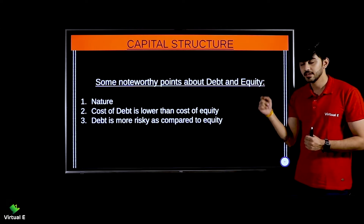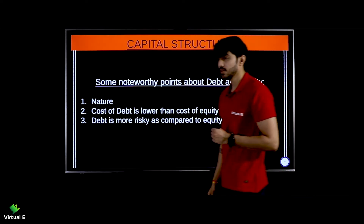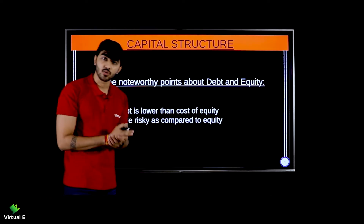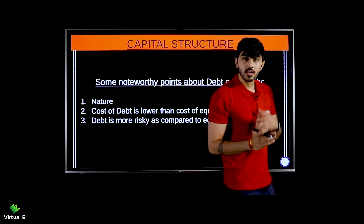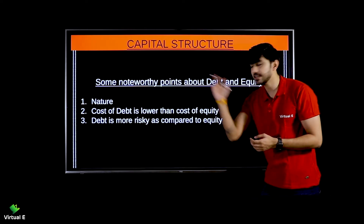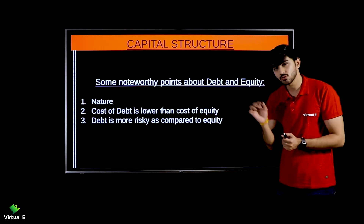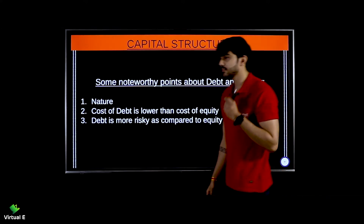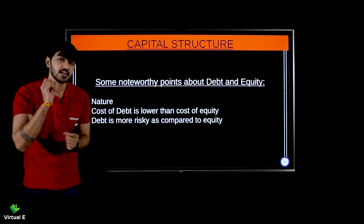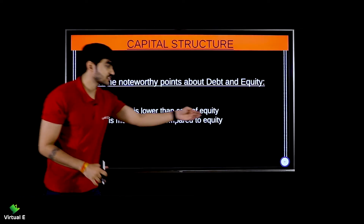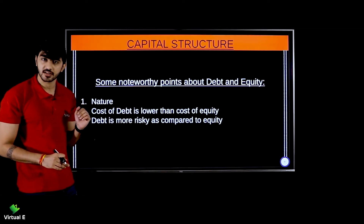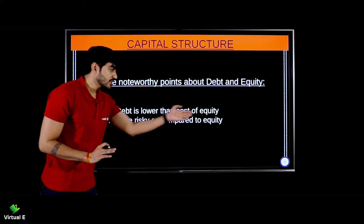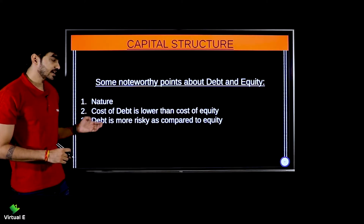Next: cost of debt is lower than the cost of equity. When you raise a bank loan, there is a fixed rate of interest which is pre-decided. So the cost of debt is fixed. But how is it lower than cost of equity? Because equity holders do not have any fixed interest rate or fixed dividend - whatever extra profit is earned, the entire profit goes to equity shareholders. So the cost of debt is lower because the rate of interest is fixed.